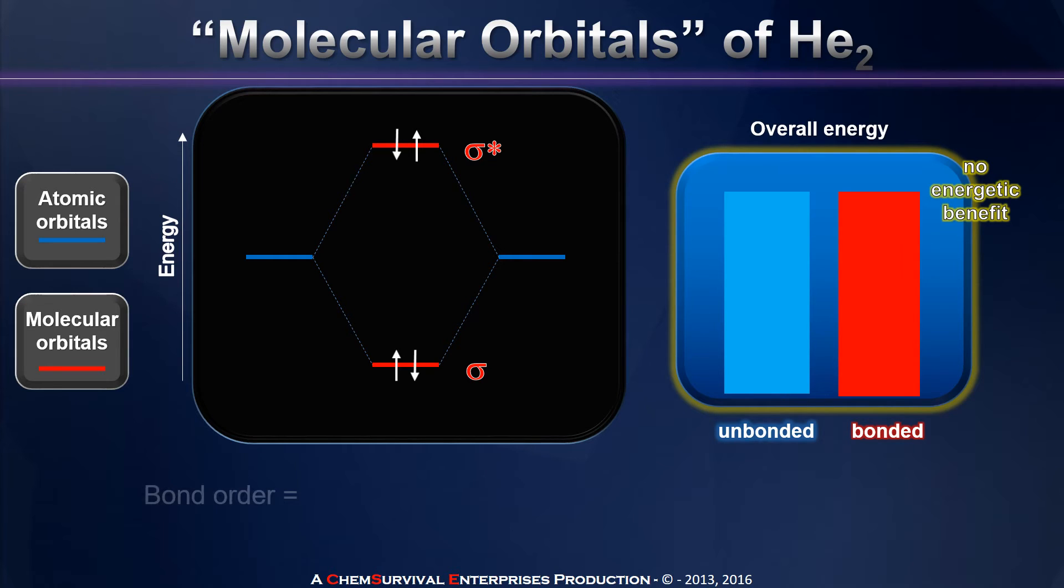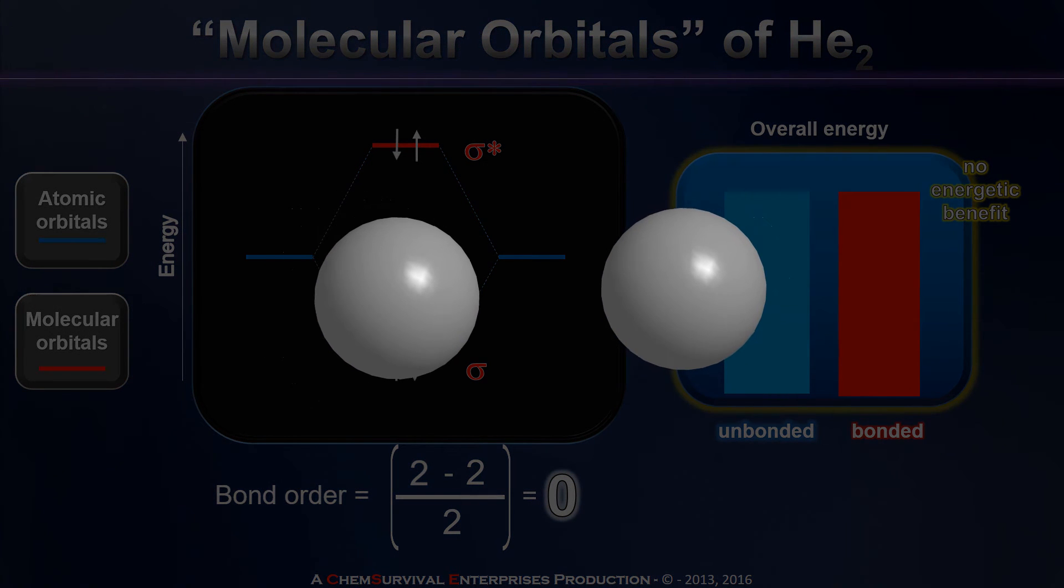And in fact, that's exactly what we see. When we calculate the bond order, we find that two bonding electrons and two antibonding electrons leads to a situation where we predict a bond order of zero. In other words, we don't predict a bond at all. And when we study helium in the laboratory, that's exactly what we find. Helium exists as isolated atoms.